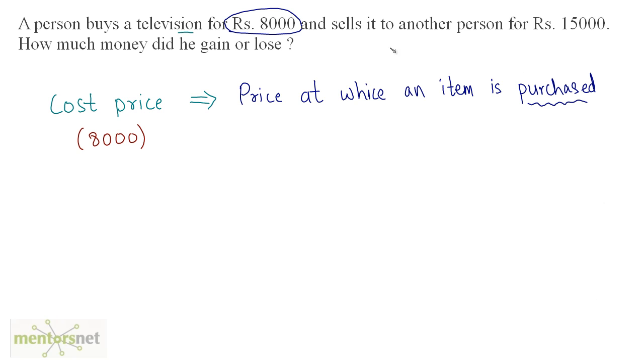Now this person sells this television to another person for 15000 rupees. 15000 is the selling price here, and it is defined as the price at which an item is sold. We have our selling price as 15000 rupees.